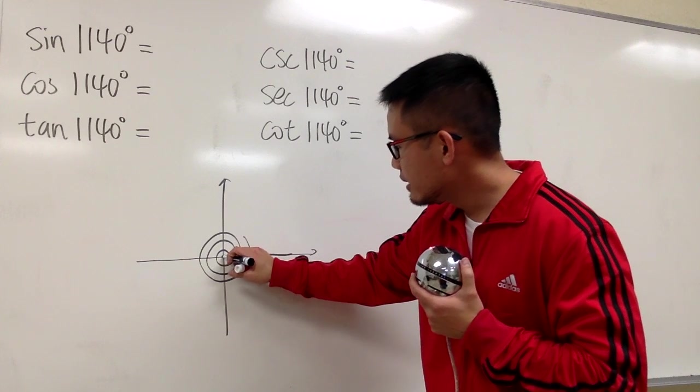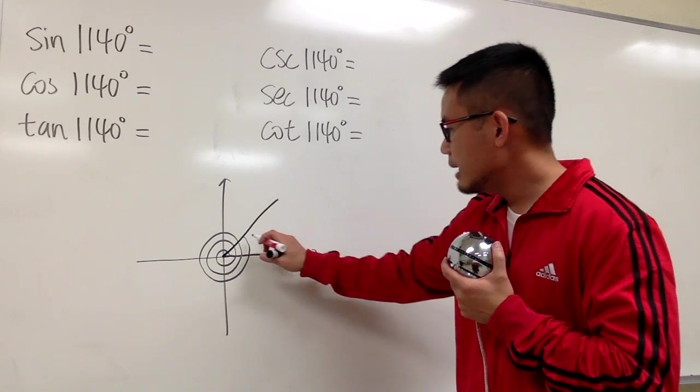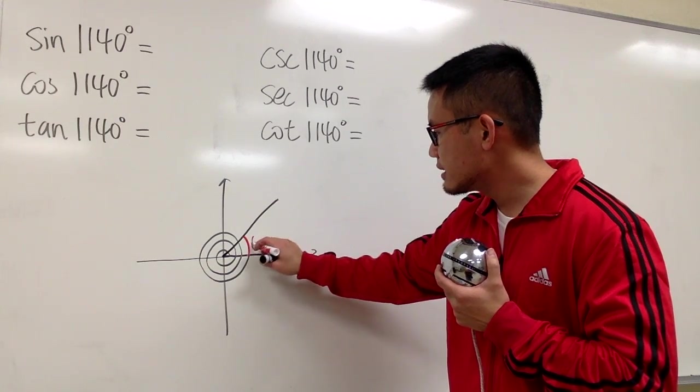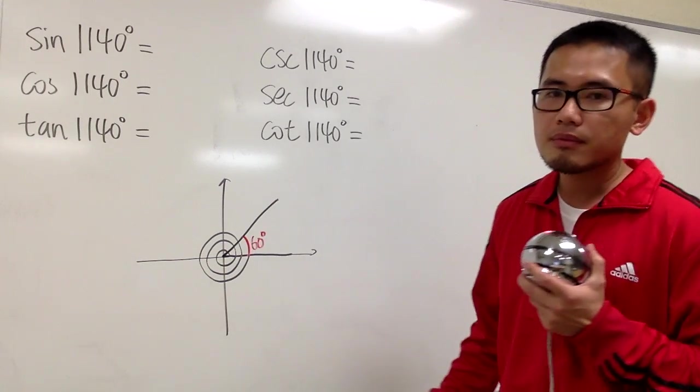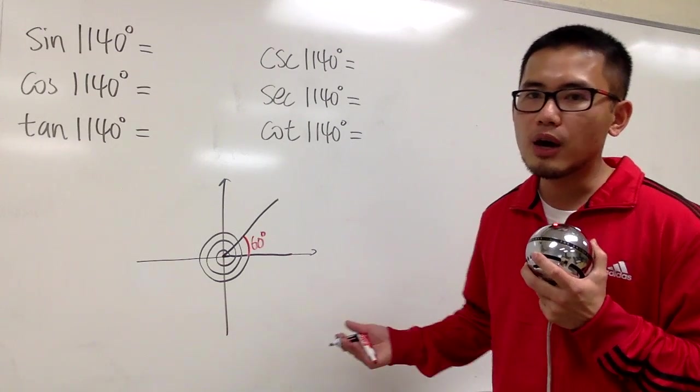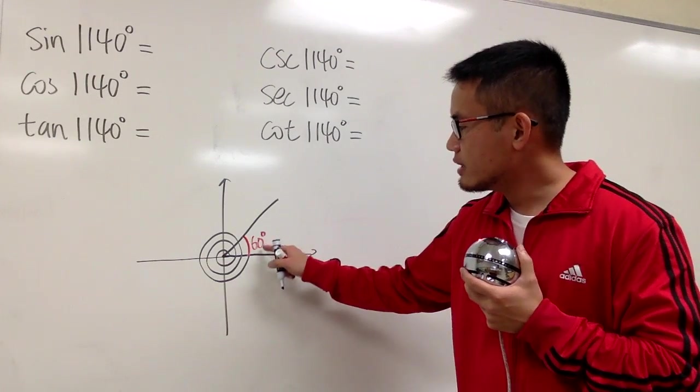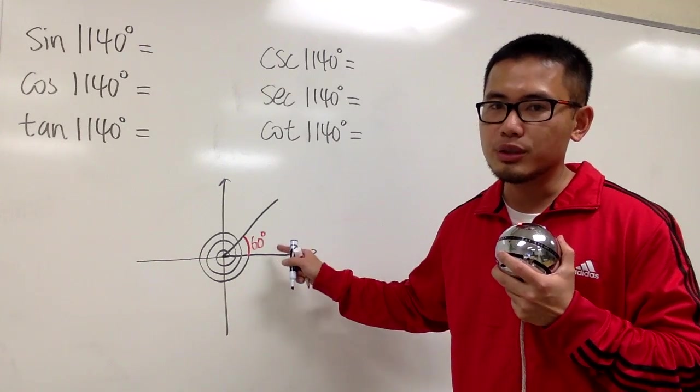Anyways, you see, this is my terminal side, okay? And let me label this right here for you guys. This is 60 degrees. And whenever the question is asking you to find the exact values, you are going to use a special right triangle. You see it already. You have 60 degrees, right?